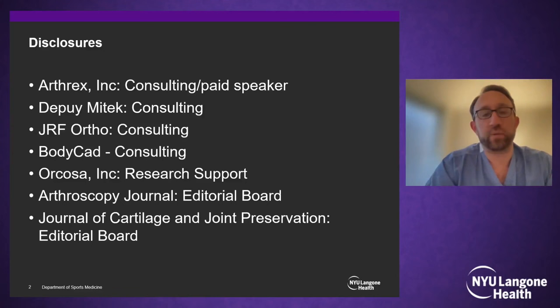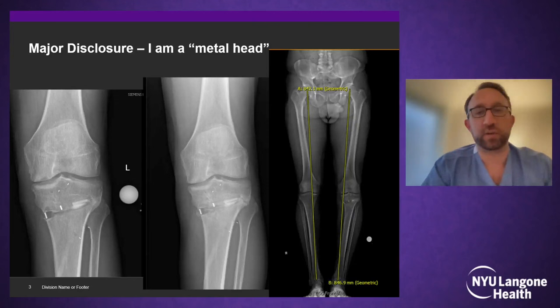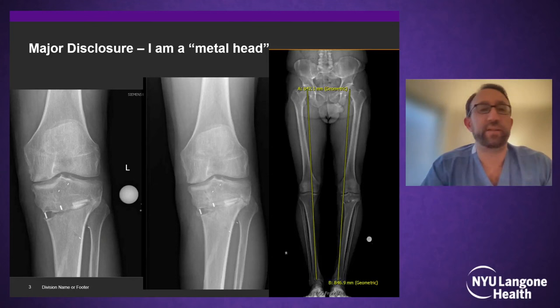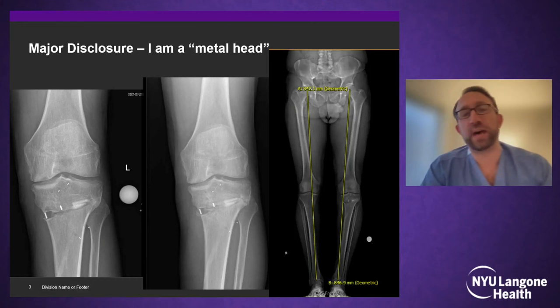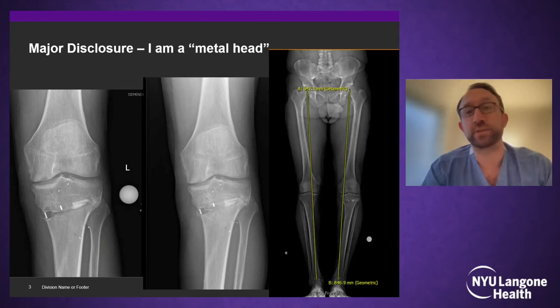I'm going to talk about something a little more challenging, tying it all together in terms of HTOs, DFOs, and tricks to get this right in isolation and in combination. I do consult for one of the patient-specific osteotomy companies; however, several are on the market and they all are excellent. My biggest disclosure is that I'm a metalhead when it comes to osteotomies. I've seen inlay products fail — they typically fail on the lateral side for HTOs, fracturing out the lateral side so that the inlay becomes the new hinge point, rotating into more varus.